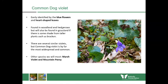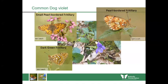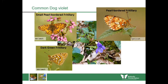Other violets we'll meet include the marsh violet and mountain pansy, but common dog violet has distinctive heart-shaped leaves. Importantly, it's a caterpillar food plant for several of our rarest top priority species including the pearl-bordered, small pearl-bordered and dark green fritillaries — really beautiful butterflies which all lay their eggs upon dog violet. If you're on an open hillside in May and see dog violets, keep your eye out for these butterflies.